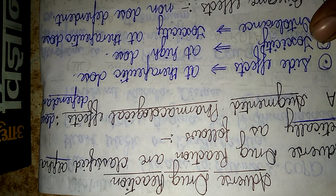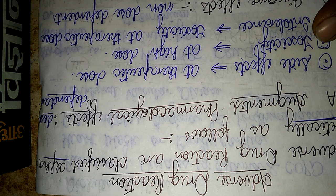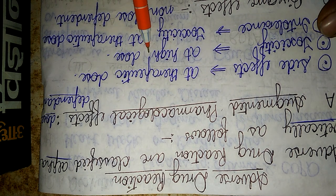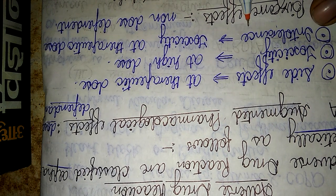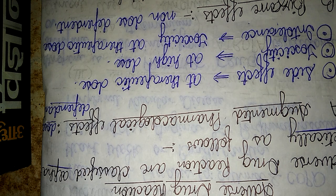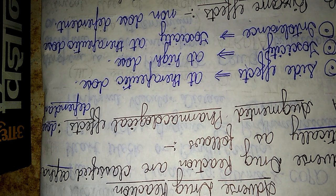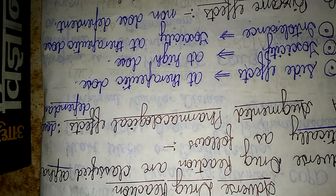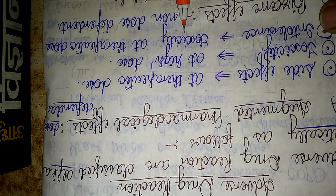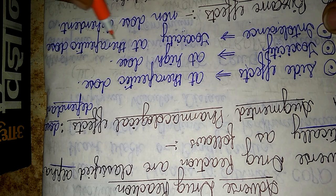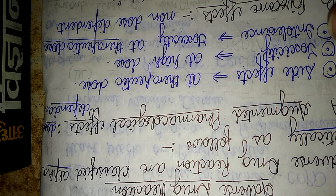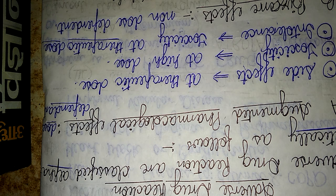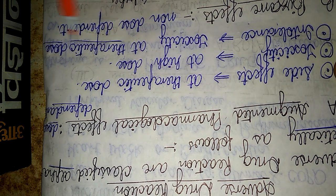The next augmented pharmacological effect is toxicity, which always occurs when a drug is administered at a higher dose. The third augmented pharmacological effect is intolerance. Certain patients have intolerance toward certain drugs — intolerance is defined as toxicity that occurs at the therapeutic dose in certain patients.